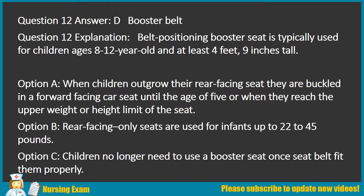Explanation: A belt-positioning booster seat is typically used for children up to age 12 and at least 4 feet 9 inches tall. When children outgrow their rear-facing seat, they are buckled in a forward-facing car seat until age 5 or when they reach the upper weight or height limit. Rear-facing only seats are used for infants up to 22 to 45 pounds. Children no longer need a booster seat once the seat belt fits them properly.